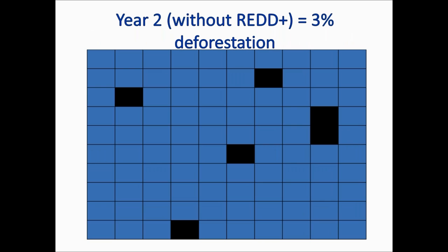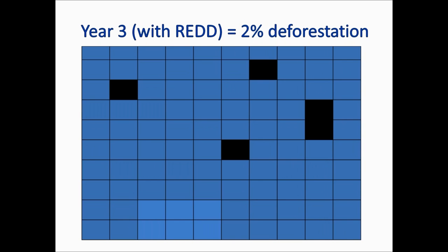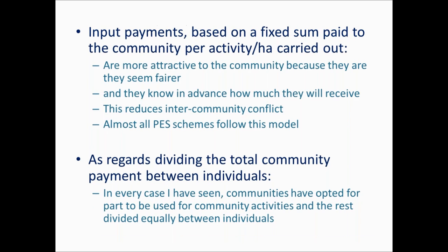Input payments are a much easier way to go, but it doesn't mean communities don't need to monitor — they need to monitor for other reasons, just not necessarily to be paid. The advantages: they'll know how much money they'll receive, and it's a much less conflictual payment system. Most PES systems actually use this model. Regarding dividing funds between community members, in my experience communities given the choice opt for equal payments — sometimes with some money given to the community as a whole for community works. This is what's happening in Mexico at the moment, where REDD is run as a sustainable development program with upfront payments to carry out activities resulting in more sustainable forest management.